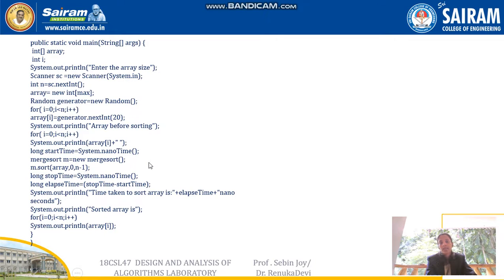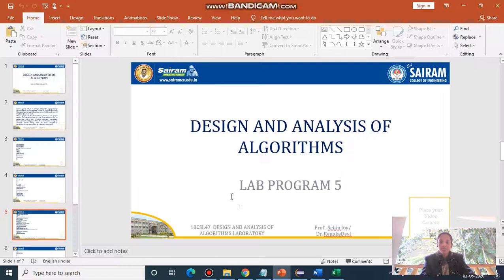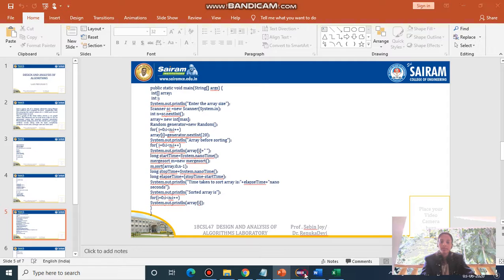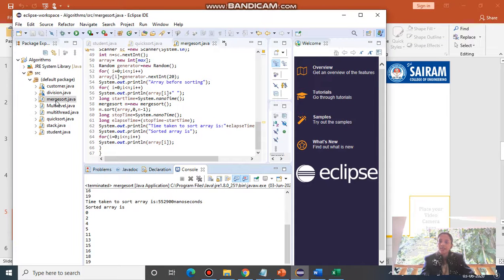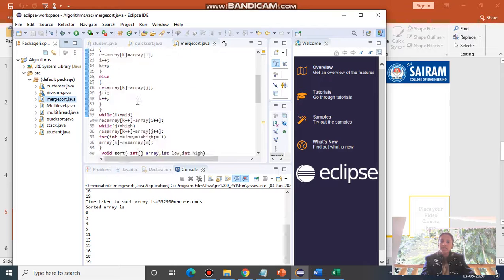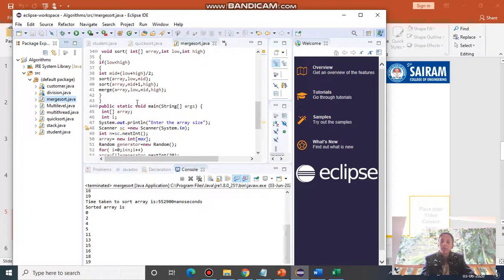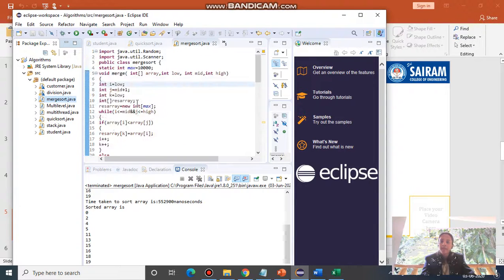This is almost the same logic as the quicksort algorithm, but with a key difference in dividing the array — here we are not using the partition algorithm. Instead, we use the sort algorithm to divide elements into different parts. Now we will check the demonstration. I have already created the class called Merge Sort, and the same program code is copied here and I am going to run it.